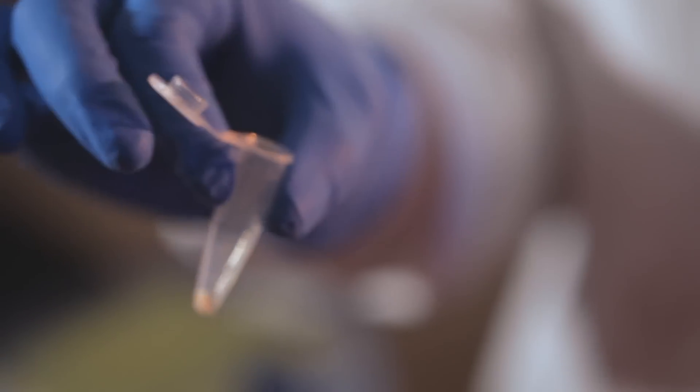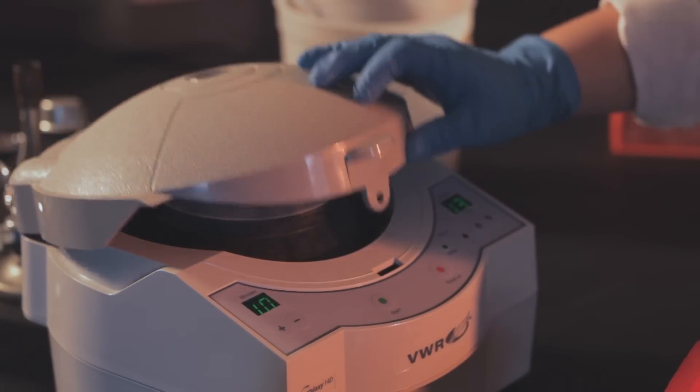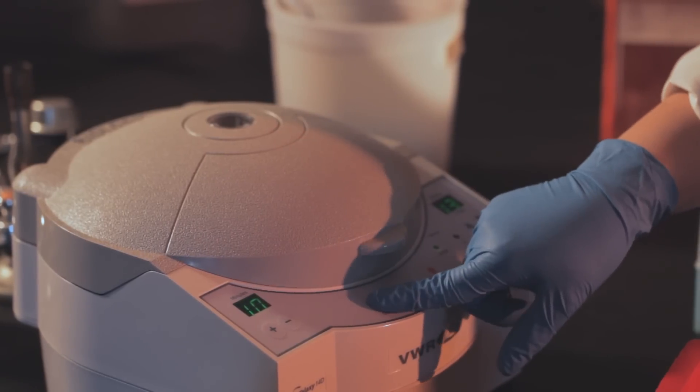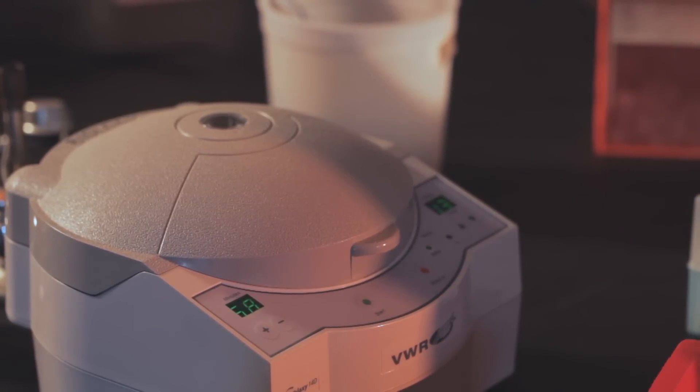In some cases you may want to spin down an additional 1.5 milliliters of bacterial culture in the same tube to increase plasmid DNA yield.